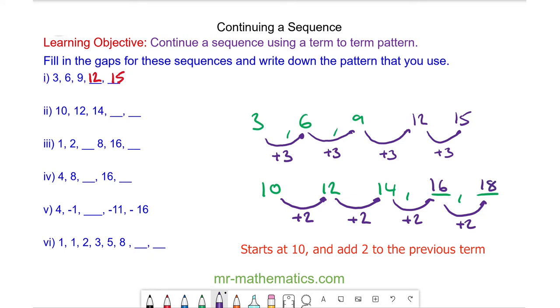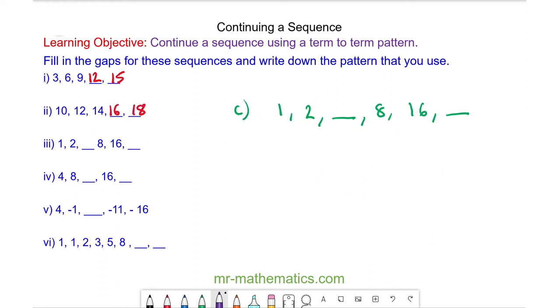Here is our description of this sequence. For question C, if we look at our term to term rule, we might think it will be add 1, but 2 add 1 would make 3, and 3 add 1 does not make 8. So we need a different term to term rule.